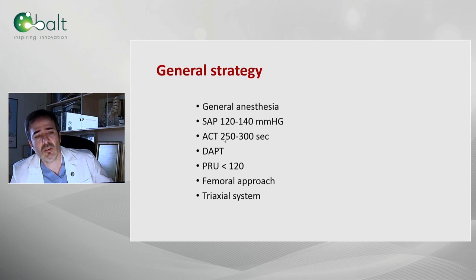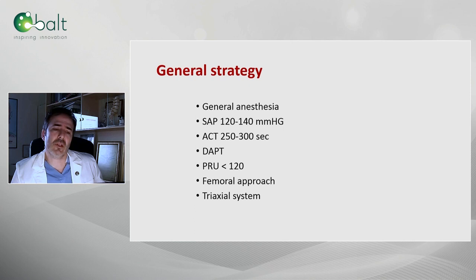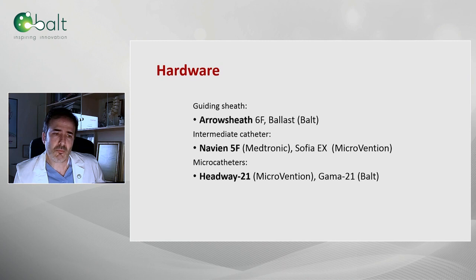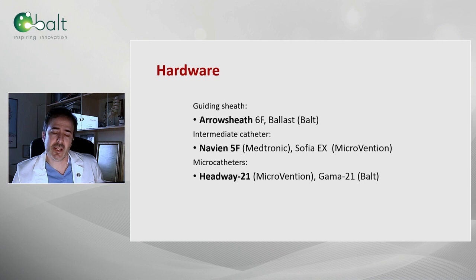General anesthesia, normal tension, ACT between 250 and 300 seconds, double antiplatelet with a PRU below 120. We really stress this — we don't accept higher PRUs. Femoral approach and triaxial systems. My preferred combination for the use of this flow diverter is Arrow Sheath 6 French, Navien 5 French, and Headway 21. In special cases where the carotid is very tortuous, I go for SOFIA EX.